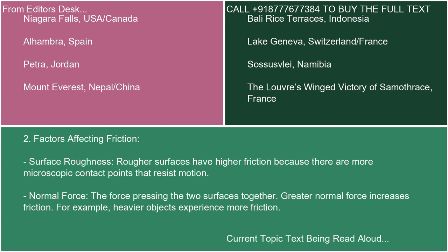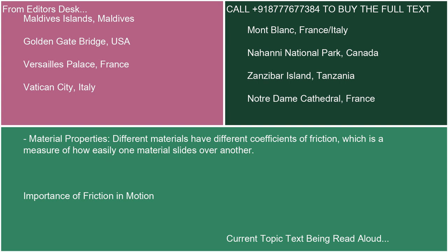Factors Affecting Friction: Surface Roughness — rougher surfaces have higher friction because there are more microscopic contact points that resist motion. Normal Force — the force pressing the two surfaces together; greater normal force increases friction, so heavier objects experience more friction. Material Properties — different materials have different coefficients of friction, which is a measure of how easily one material slides over another.